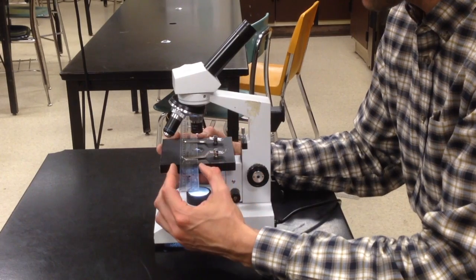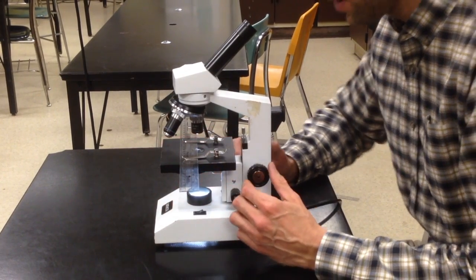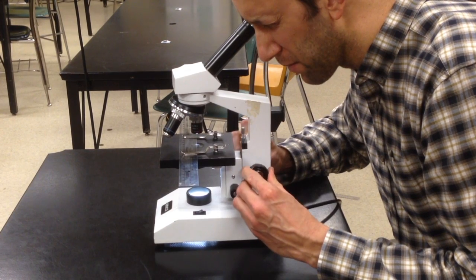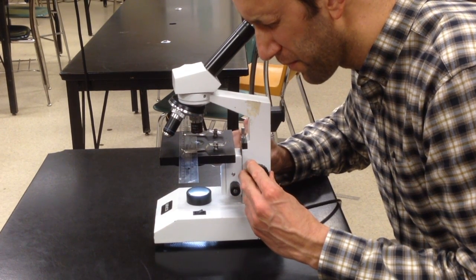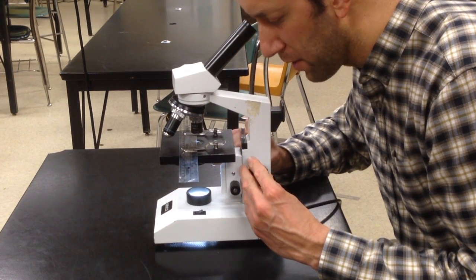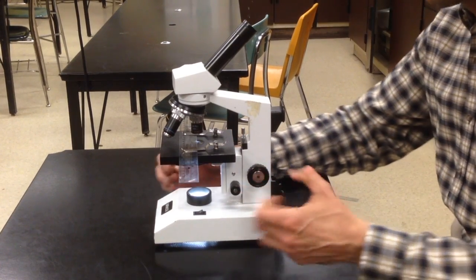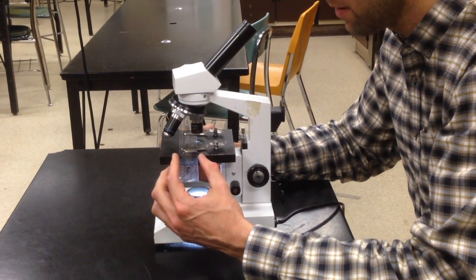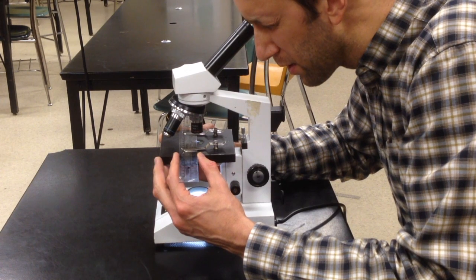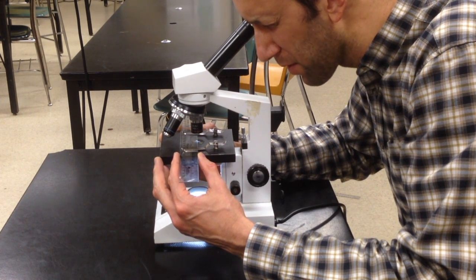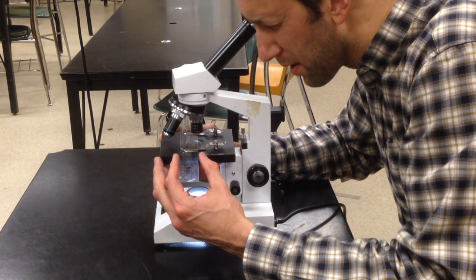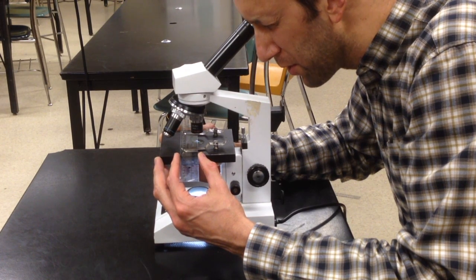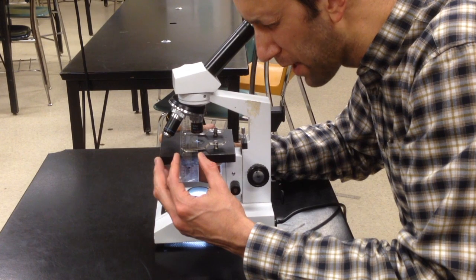I have it under the stage clips to keep it still. Now I use my coarse focus to bring it into focus. When I bring it into focus, I'll see some dark lines on there. Those are the measurement lines on the ruler. You want to line those up so that one of your measurement lines is on the left edge of your field of view, and so that the edge of the ruler goes across the center of your field of view.